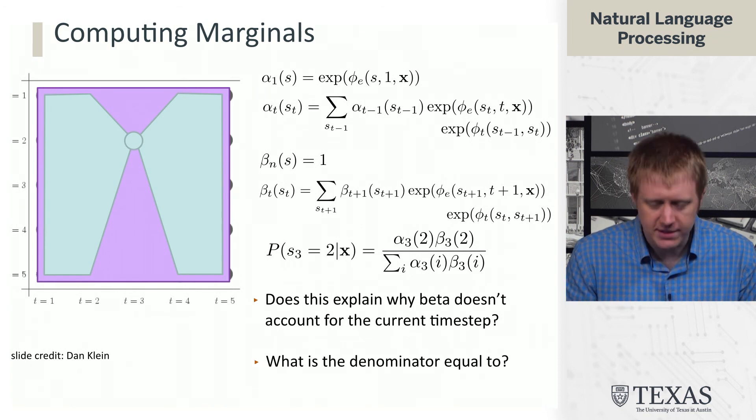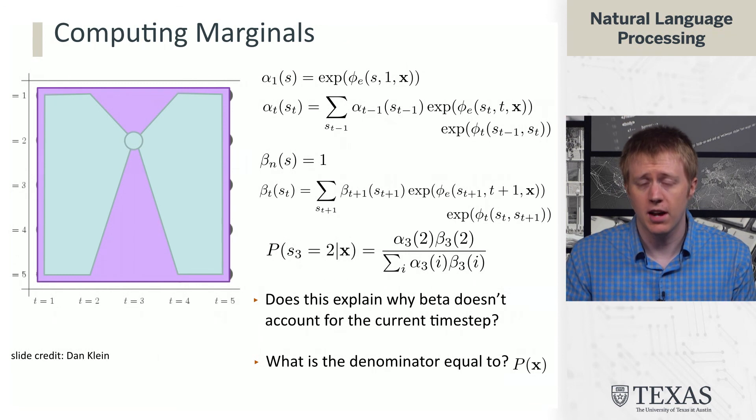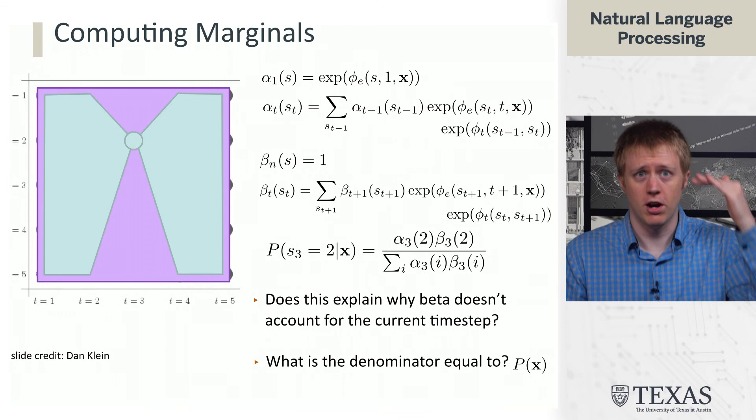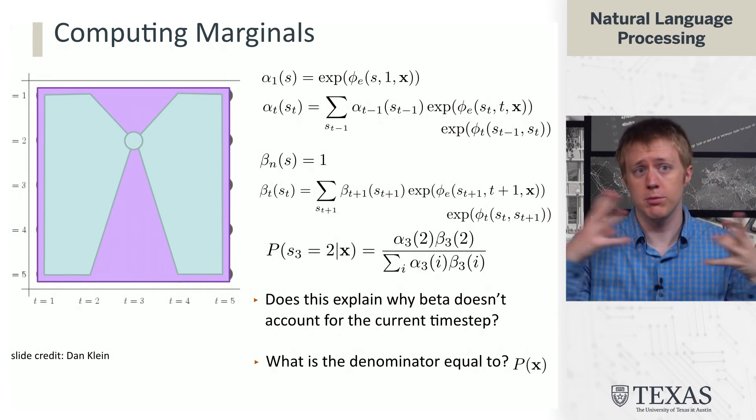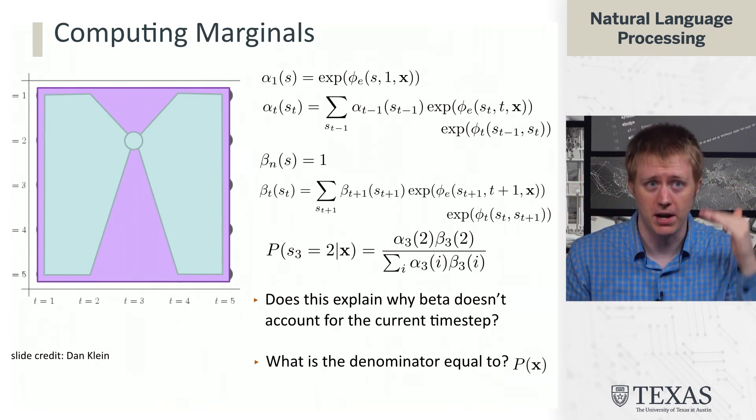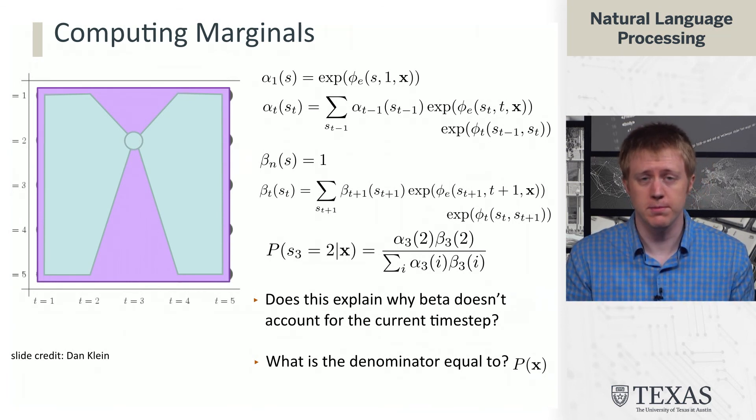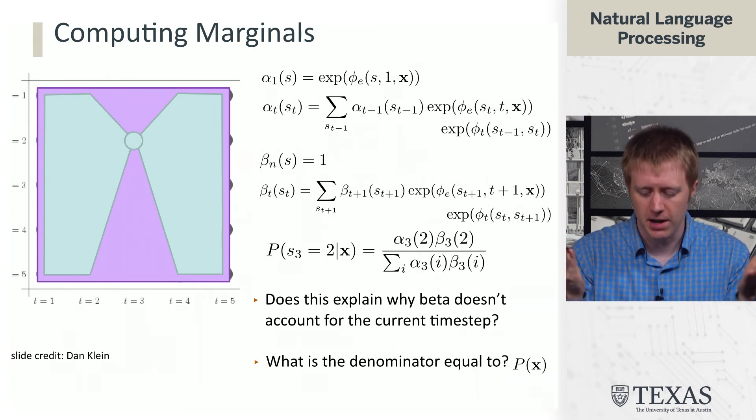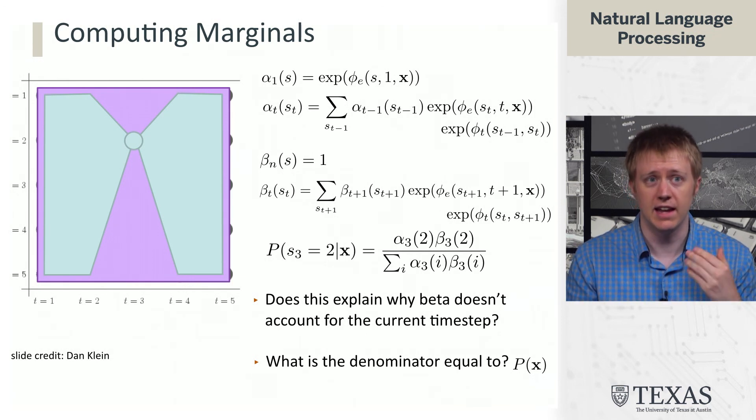And the last detail is this denominator thing. This is a little bit weird. Turns out this denominator equals p of x. And the reason is because we are summing over all the possible states that we could be going through at this time step. And once we sum all those up, it turns out we end up with the purple thing, which is just the sum over all the possible paths through the state space. So there's actually many ways to compute this denominator. You can compute it at any possible time step and it should always give the same value, which is a very good way to sanity check that your implementation of this is correct.